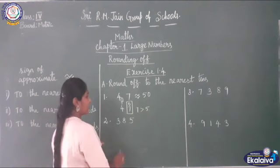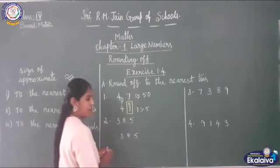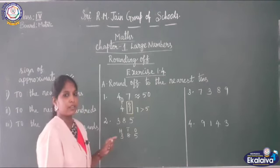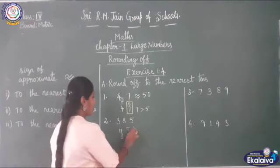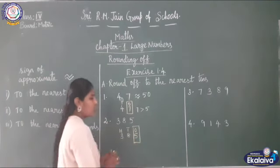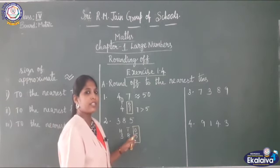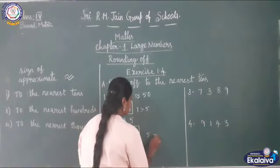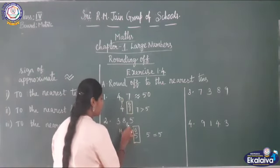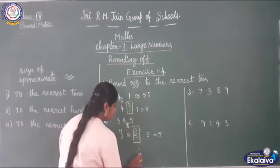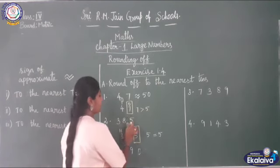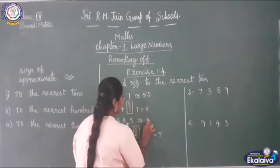Next sum: 385 is the given number. Write the place value — ones, tens, hundreds. When rounding off to the nearest tens, check the ones place. In ones place it is 5. As I said, if it is 5 or greater than 5, you add 1 to the tens place. So you put 0 in ones place. 8 plus 1 is 9. Write the number in hundreds place as it is. So the approximate value of 385 is 390.